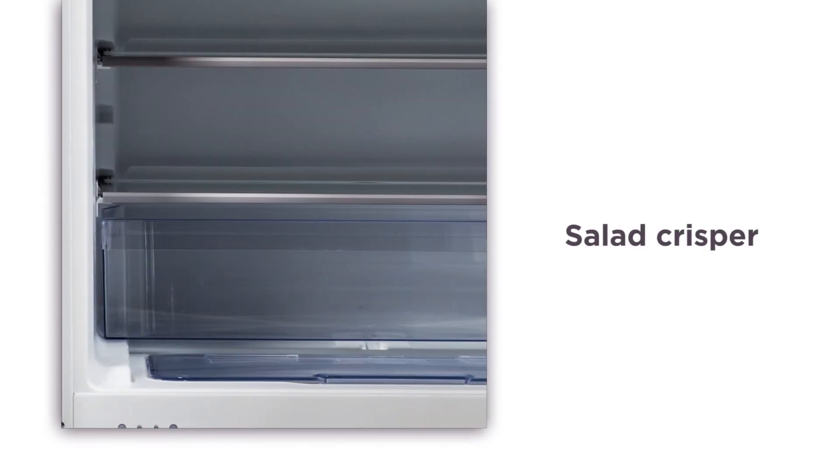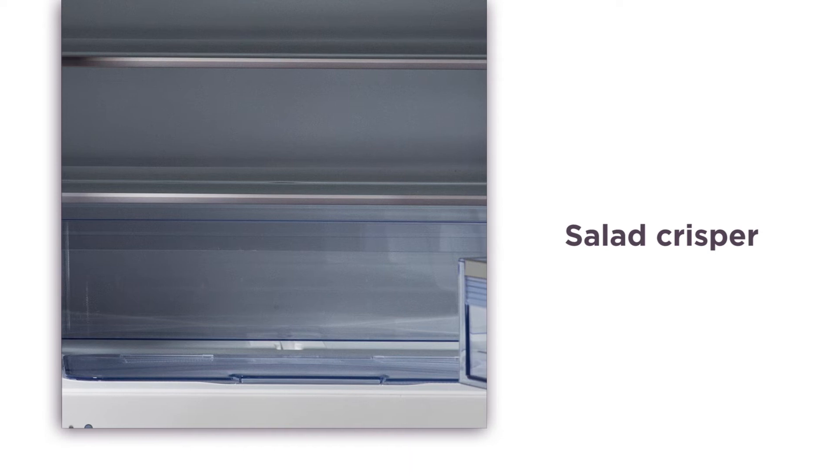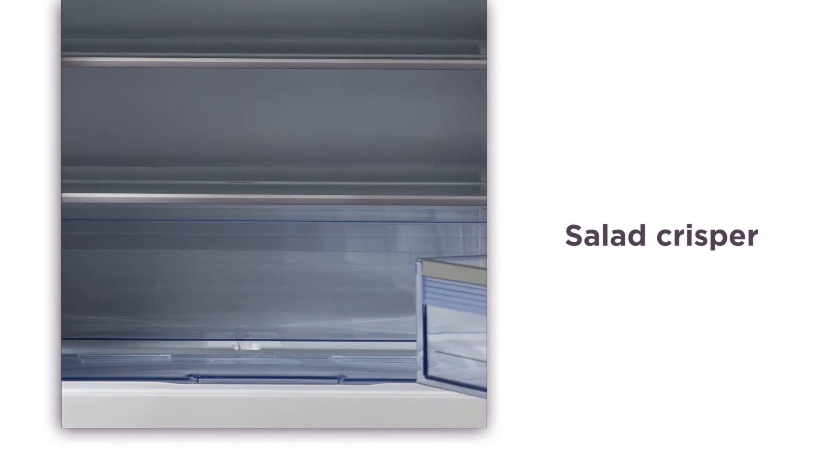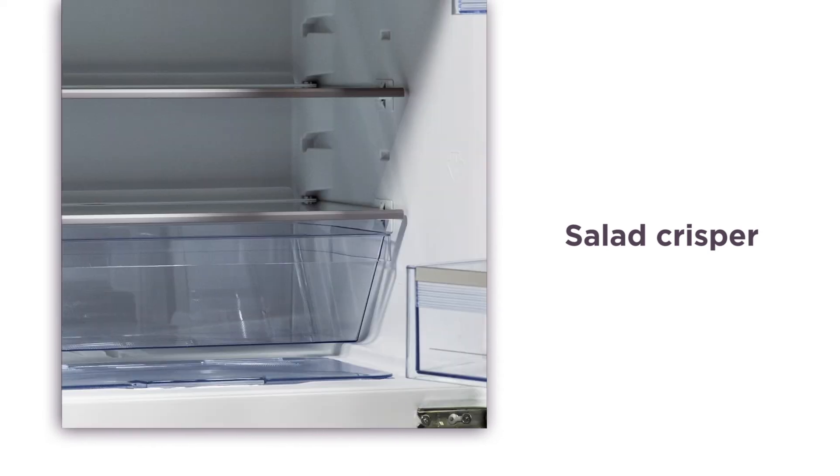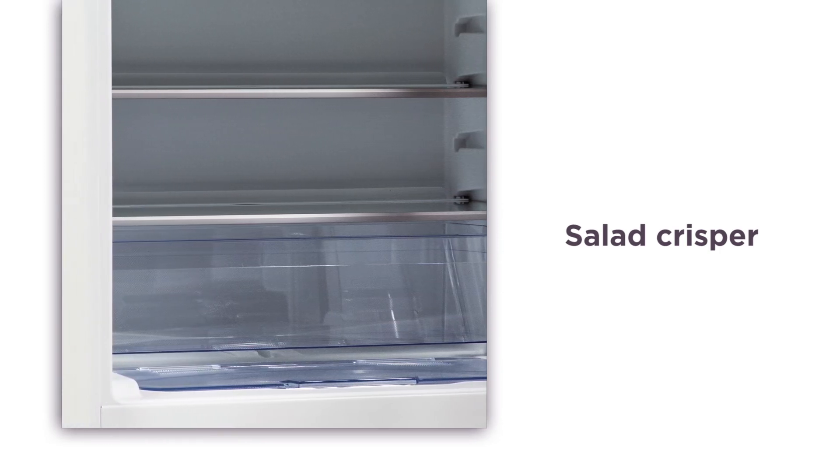The handy salad crisper is great for storing all your vegetables and fruits thanks to its rippled base which provides improved air circulation to keep your food fresher for longer. What's more, you can keep your fruit and veg separate and safe from damage or bruising.